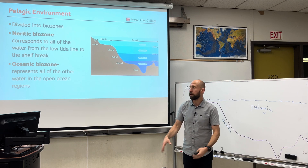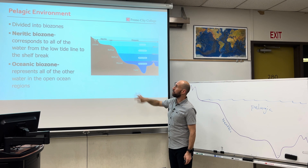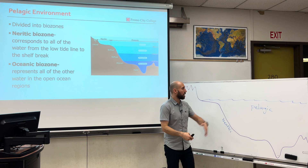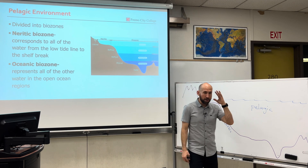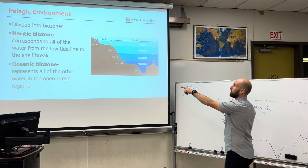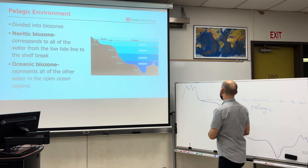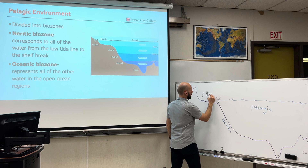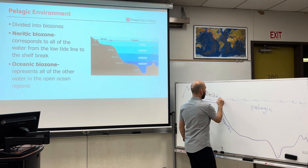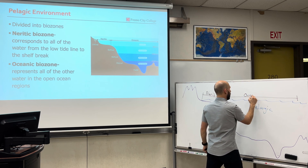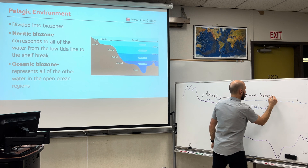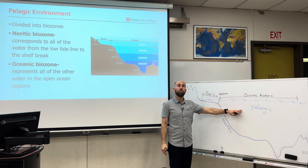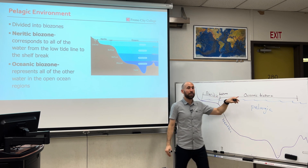Now we add on layers of complexity. The open ocean has biozones: the neritic and the oceanic. The pelagic has the neritic, which means basically near shore — right from the low tide line to the shelf break. Here's the shelf break, here's the low tide line — we're going to call this neritic. And then everything else in the open ocean is oceanic. The pelagic environment is the open ocean divided into the neritic biozone and the oceanic biozone.